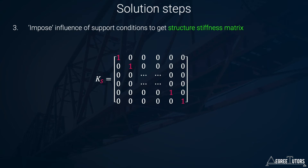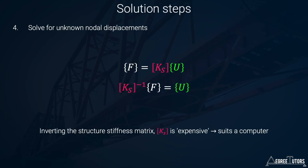Imposing the boundary conditions effectively reduces and simplifies the primary stiffness matrix. This is shown as a matrix with zeros and ones on the diagonals, with a central portion that still contains numerical values. The primary stiffness matrix captures the makeup of the structure, and the structure stiffness matrix reduces it down by imposing knowledge of the boundary conditions.